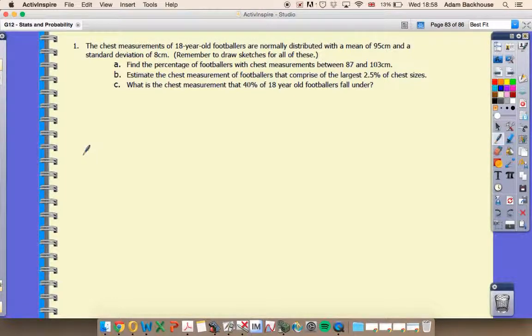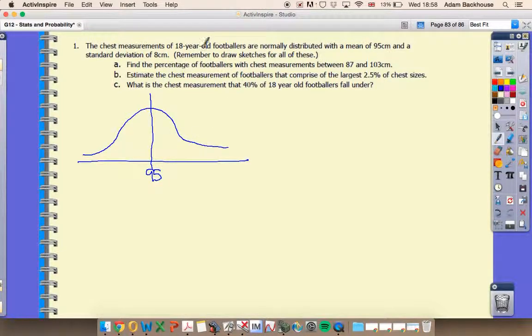I'm going to draw out my normal curve and mark roughly where the mean is. The mean is 95 in this question. I'm looking at the percentage of footballers with chest measurements between 87 and 103, so the proportion found in this region here.